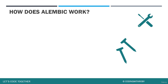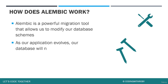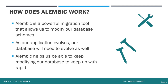A small Alembic overview: Alembic is a powerful migration tool that allows us to modify our database schemas. As our application evolves, our database will also need to evolve. Alembic helps us modify our databases to keep up with the rapid development world. Also, Alembic helps us continue with no fear of breaking our application because we can always roll back our database changes by downgrading — a feature given to us by Alembic.